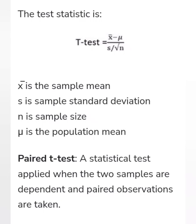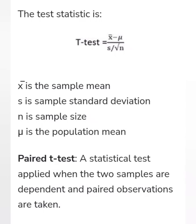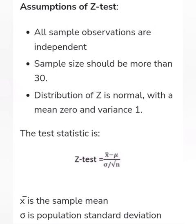Here, means are known and variance is not known. The z-test is a statistical method. When the sample size is larger, we use the z-test. Both the t-test and z-test are similar, and the formula is also the same.